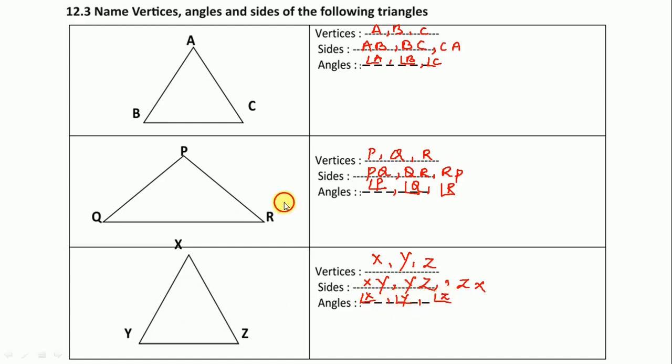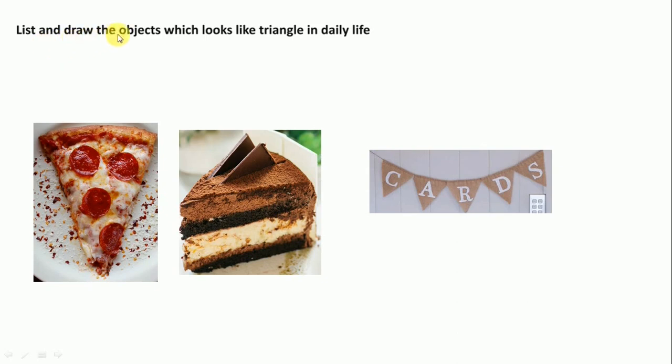Next one is list and draw the objects which look like triangle in daily life. You can draw a piece of pizza, it is in the triangle shape, and you can draw a cake piece, it is also in the triangle shape, and we use paper triangles for decorations. Likewise you can draw triangle shapes.